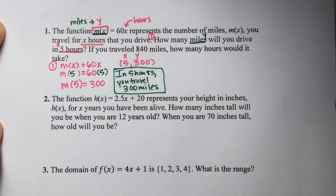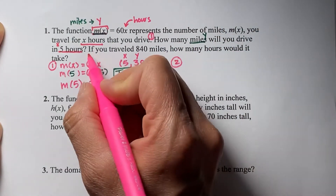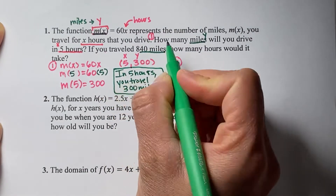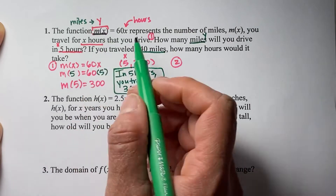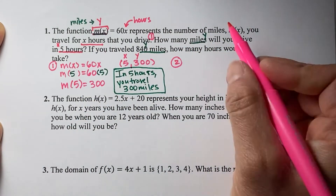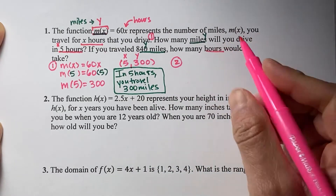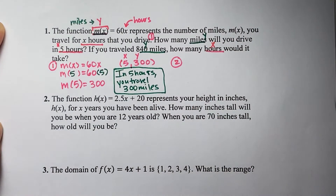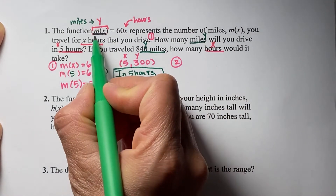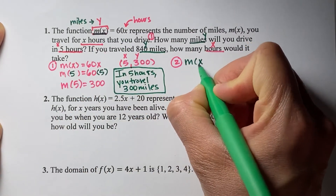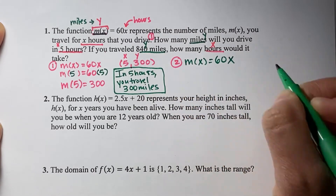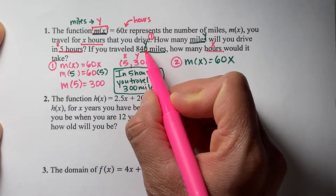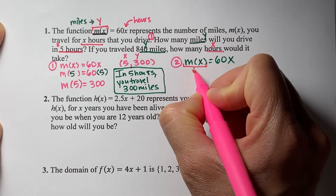For question number two: if you traveled 840 miles, they're giving you the miles, so you know what y is — 840 is the y value. You're asked how many hours it would take, and x is the number of hours, so this time you'll work backwards and find x. Let's write our function: m of x equals 60x. We identify what we're given and what we need to find.